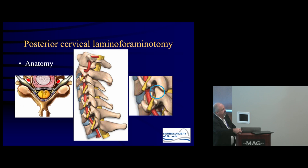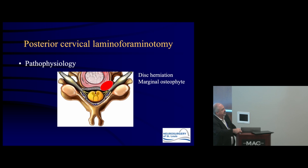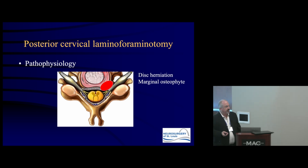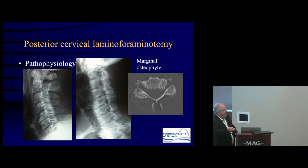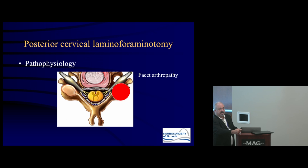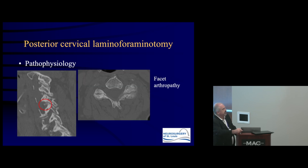What can affect the nerve root in the foramen? Most commonly it's a disc herniation or marginal osteophyte compressing the nerve root. On imaging you can see the disc impinging the nerve right in the foramen — a great candidate for foraminotomy. With marginal osteophytes, oblique x-rays show spurs narrowing the foramen, and axial CT shows those spurs digging into the foramen.